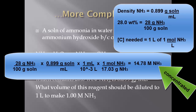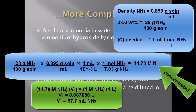They just want to know how much volume of that do I need to make one liter of one molar NH3. So now it just becomes a really simple dilution formula. You take 14.78 times V1, because that's what you're looking for, equals one molar and you want to make one liter of it. The answer is 0.067658 liters, or if you turn it into milliliters, it's 67.7 milliliters of that 14.78 molar NH3. That's what you need to dilute.